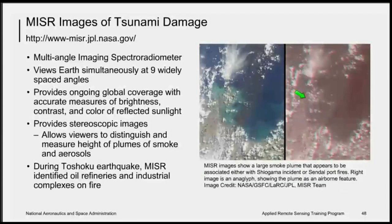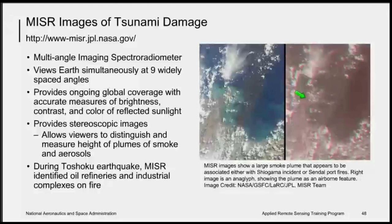We can also use MISR to show how the tsunami affected areas in Japan. MISR is the Multi-angle Imaging SpectroRadiometer. It views Earth simultaneously at nine widely spaced angles and provides ongoing global coverage with accurate measurements of brightness, contrast, and color-reflected sunlight, as well as stereoscopic images. During the earthquake, MISR provided images identifying areas on fire from oil refinery fires. The MISR image on the left shows a large smoke plume associated with the oil refinery or Sendai port fires. The image to the right is an anaglyph or stereoscopic image showing the plume as a 3D feature.